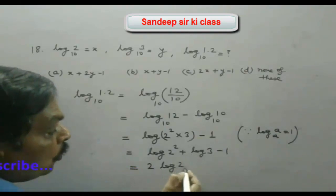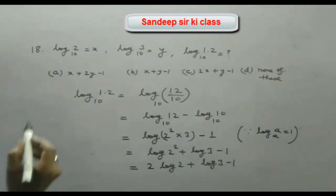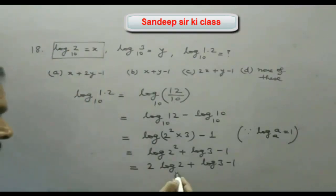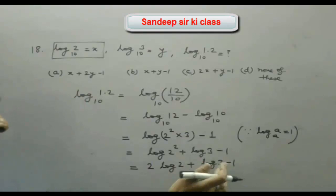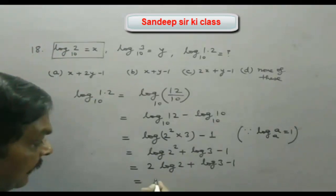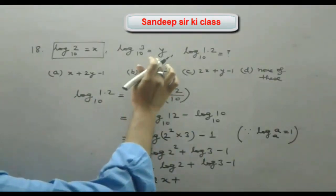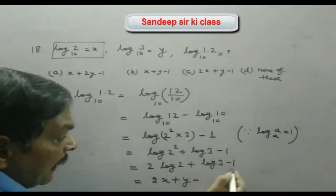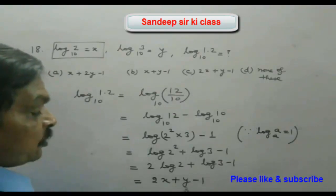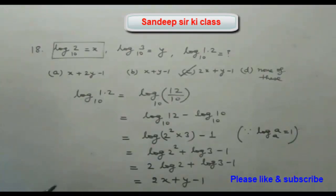Since log 2 (base 10) = x and log 3 (base 10) = y, substituting gives 2x + y − 1. This matches option C, so option C is the correct answer.